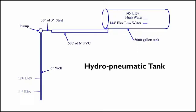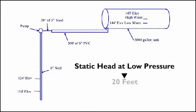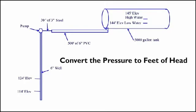The hydropneumatic tank is set to be at a water elevation of 144 feet at the low working pressure of 45 pounds per square inch. Thus the static head at low pressure would be 20 feet, which is 144 minus 124.